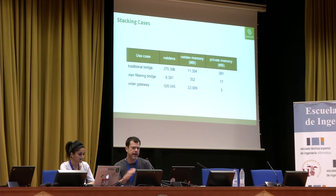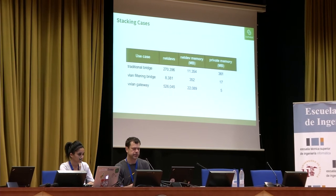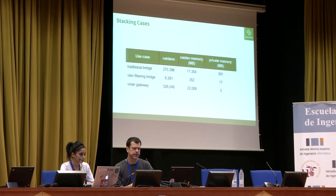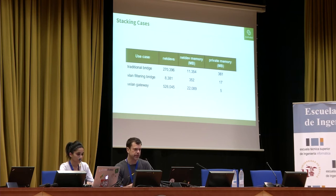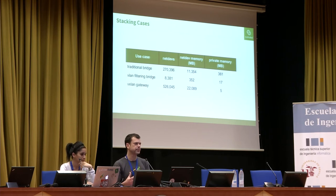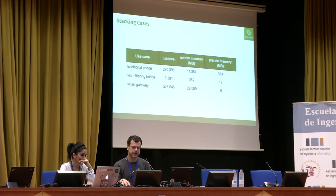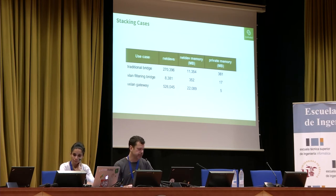Looking back at those stacking cases — when you start having 270,000 interfaces, you're using 11 gigabytes of memory just preparing yourself to do something with networking devices. Clearly something needs to give to make this much more efficient.